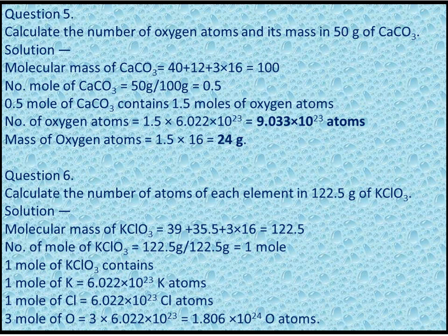Q6: Calculate the number of atoms of each element in 122.5g of KClO₃. Molecular mass of KClO₃ = 39 + 35.5 + 3 × 16 = 122.5g. Number of moles = 1. 1 mole of KClO₃ contains 6.022 × 10²³ K atoms, 6.022 × 10²³ Cl atoms, and 3 × 6.022 × 10²³ = 1.806 × 10²⁴ oxygen atoms.